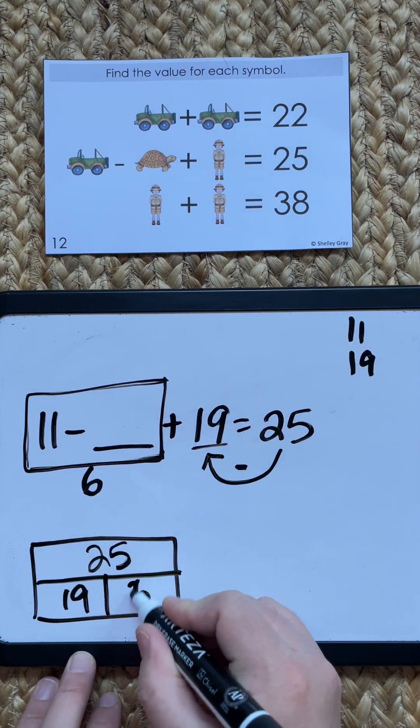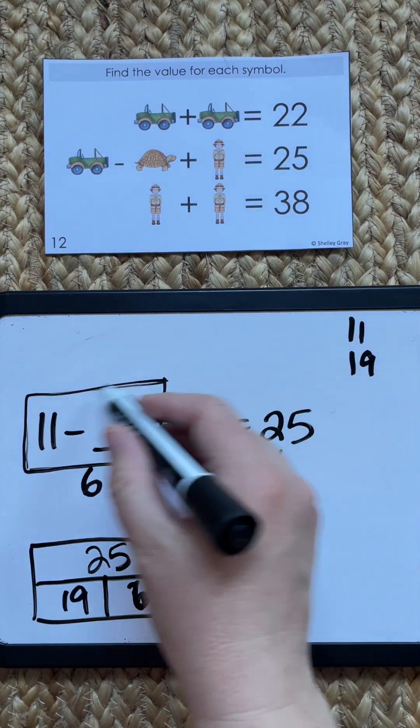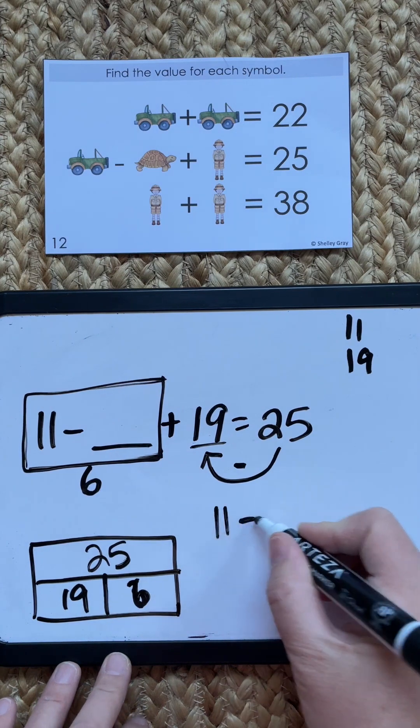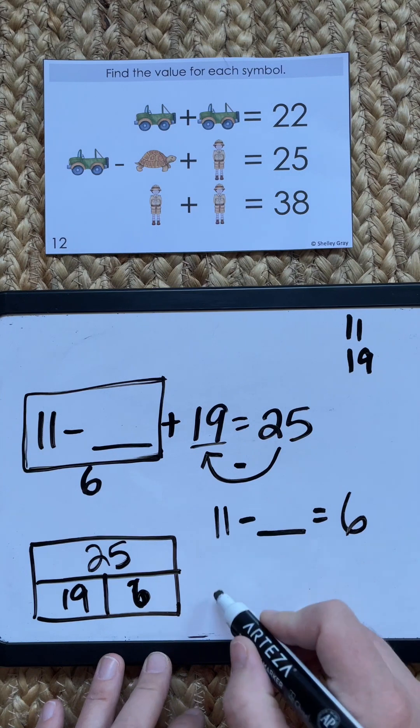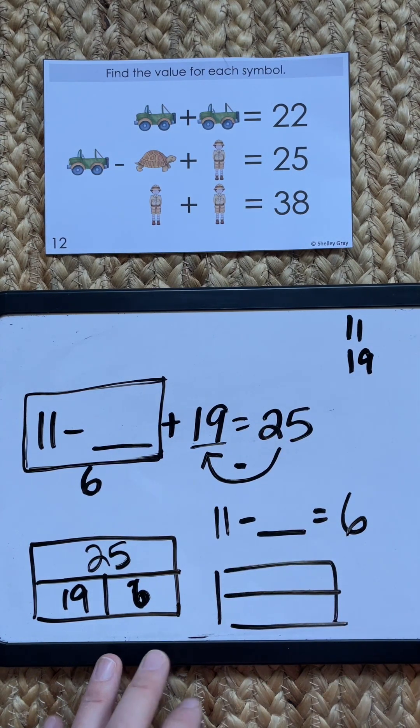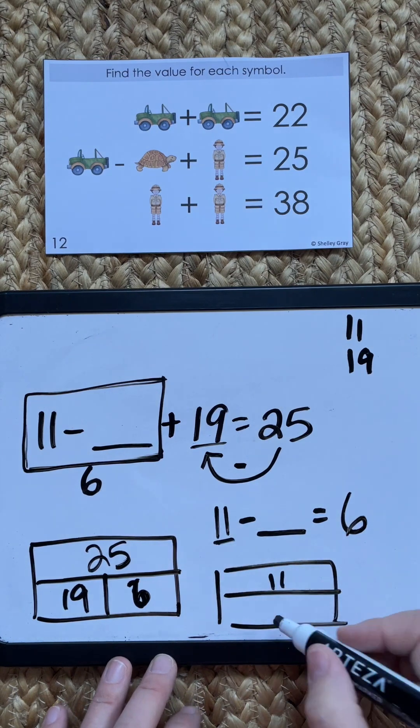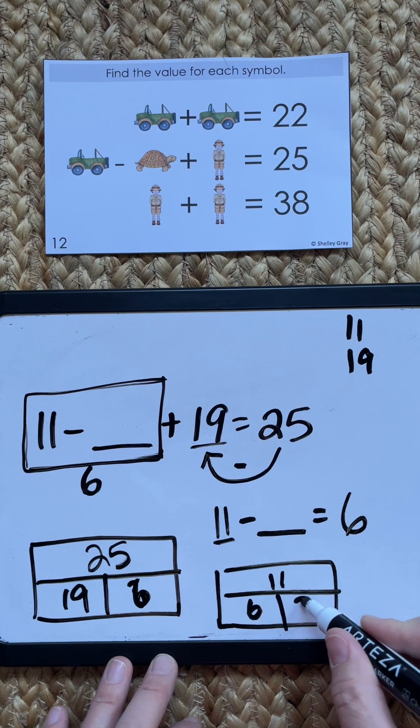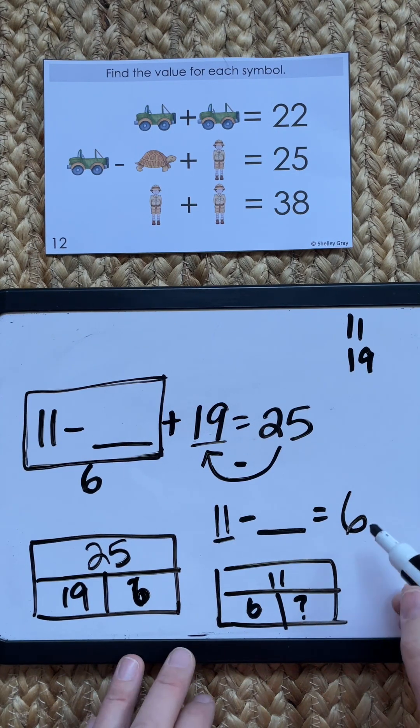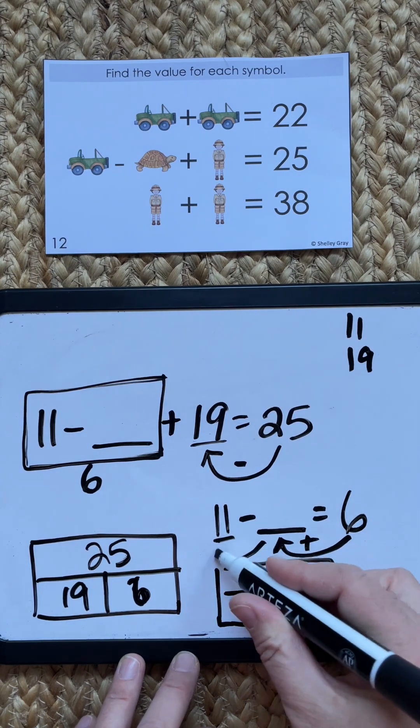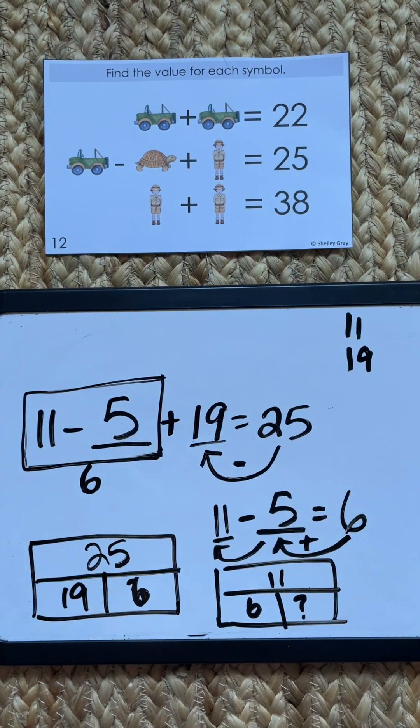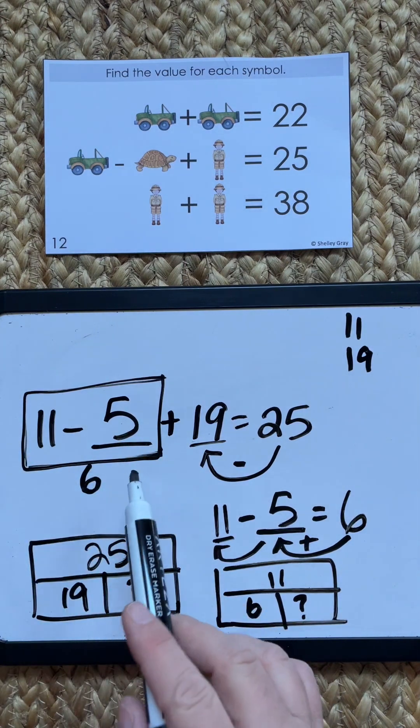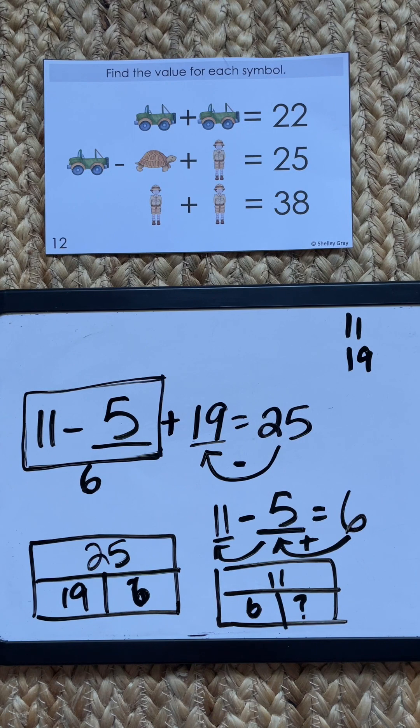And now we need to figure out something else. So now we know that this piece is 6. So 11 subtract something equals 6. Most of your kids will probably be able to figure out that that's a 5. But if not, let's look at how we can solve that using a part-part-whole. We know that in this case our whole is 11, we know one of our parts is 6, we do not know this part. So we just need to figure that out. We can also think 6 plus something equals 11 and count from there if we're struggling with that. So now we know this has to be a 5. We can fill in 5 there. And now we just check: 11 subtract 5 is 6, plus 19 is 25. We know we've done it correctly.